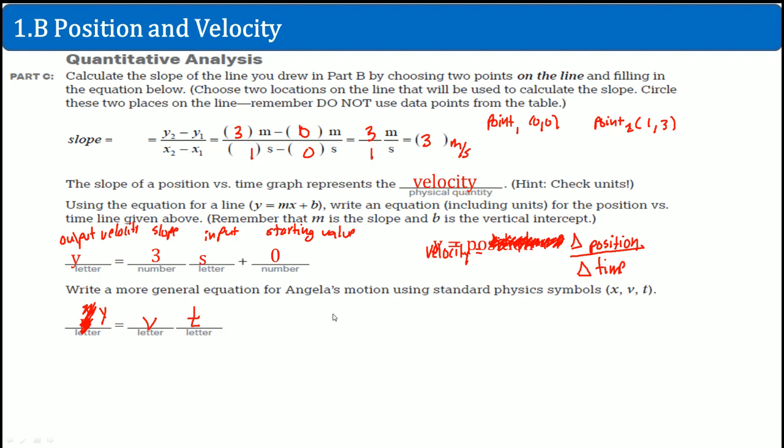So, you could say that the x is defined as your x initial plus velocity t. Or you could say y is equal to y initial plus v times t. That's it. So, there should be some subscripts down here. But the velocities should be the same.